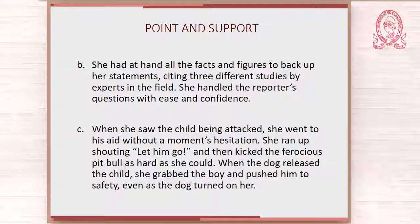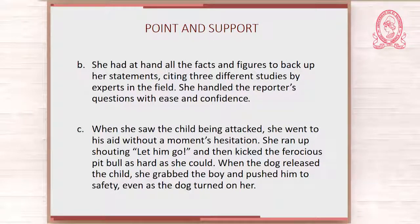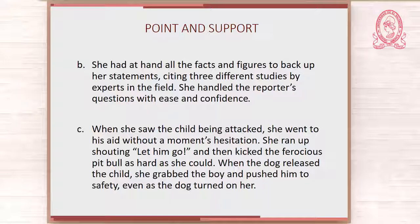Langen explains that the information in Letter A tells us about a kind and generous woman. Nothing she did required her to face danger, so no courage was required. The information in Letter B described a woman who showed mastery of her subject and skill in an interview, but neither demands great courage. The woman described in Letter C put herself in danger to help a child. Clearly, to do so, she had to be courageous. So if you chose this item, you were correct.